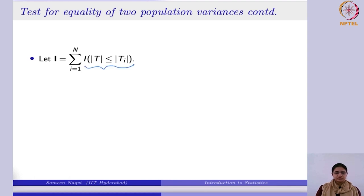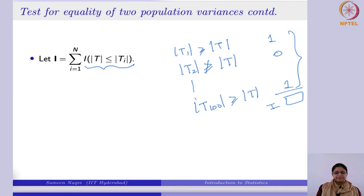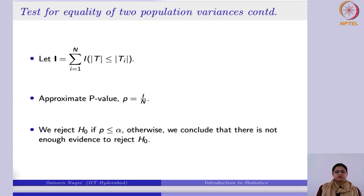The indicator is 1 whenever the condition is true — whenever t_i is greater than t, it gives you 1; otherwise it is 0. You keep comparing up to 100 bootstrap samples, counting how many times the statistic is greater than or equal to t. You count how many ones are coming — that is your i — then you take the proportion i divided by n, and finally you make the decision whether to reject or not.